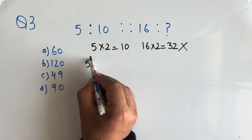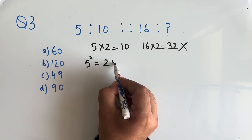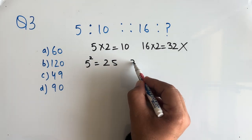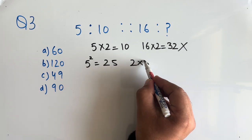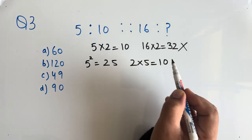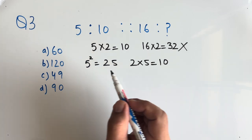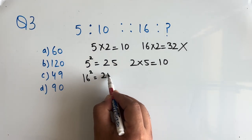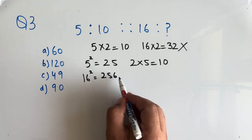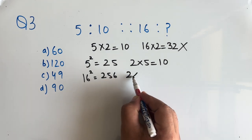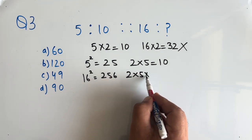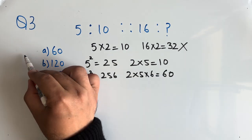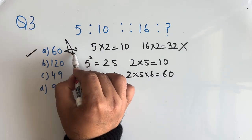Now 5 squared is 25, and if we do the product of digits, that is 2 into 5, we get 10. In the similar way we will try with 16. 16 squared is 256, and now if we find the product of digits, 2 into 5 into 6, we get 60. So option A, 60 will be the correct answer.